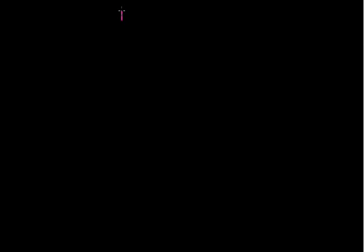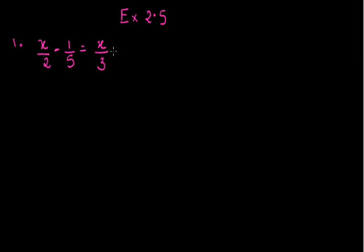Good morning class. Today we will discuss exercise 2.5 of linear equations in one variable. The first question of exercise 2.5 is: x upon 2 minus 1 upon 5 is equal to x upon 3 plus 1 upon 4. We have to calculate the value of x in this question.